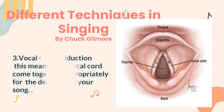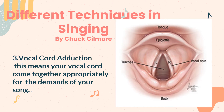The third technique is vocal chord adduction. This means your vocal chords come together appropriately for the demands of your song. The picture of our vocal chords can be seen on the right side of the slide. Vocal chord adduction means that your vocal chords actually shorten, thus leaving less of the vocal chords vibrating as you sing. As there is less area of vocal chords vibrating, it's much easier for the chords to vibrate faster.